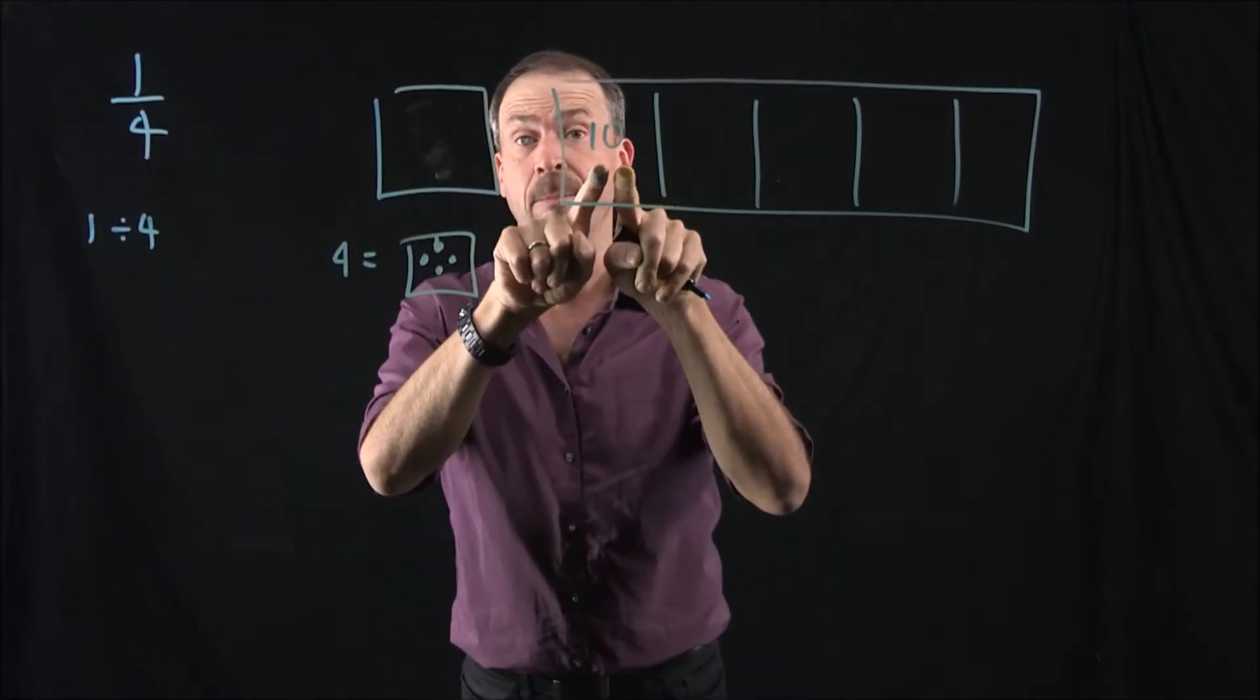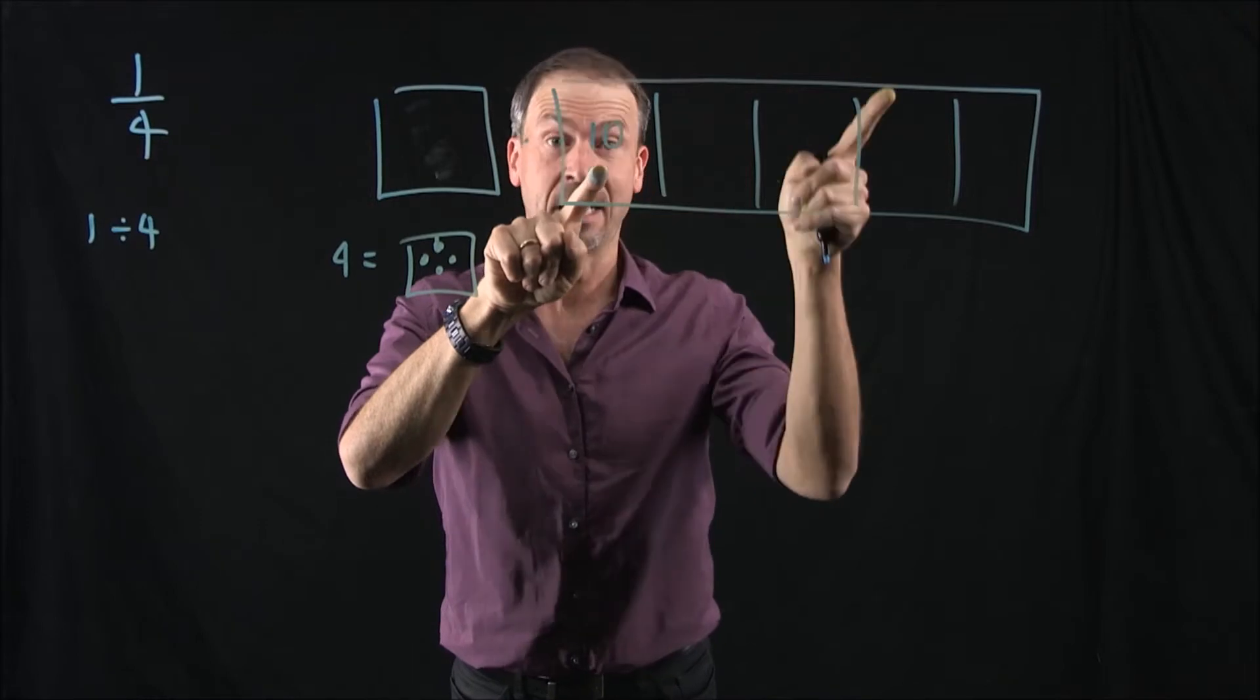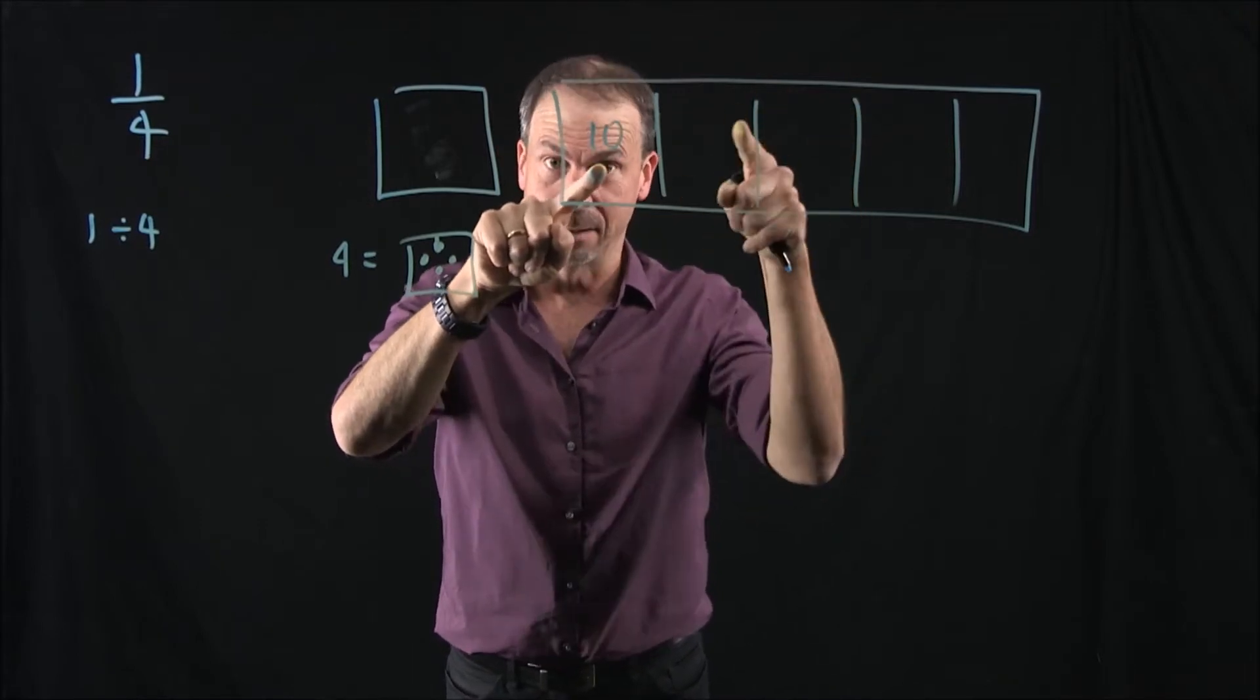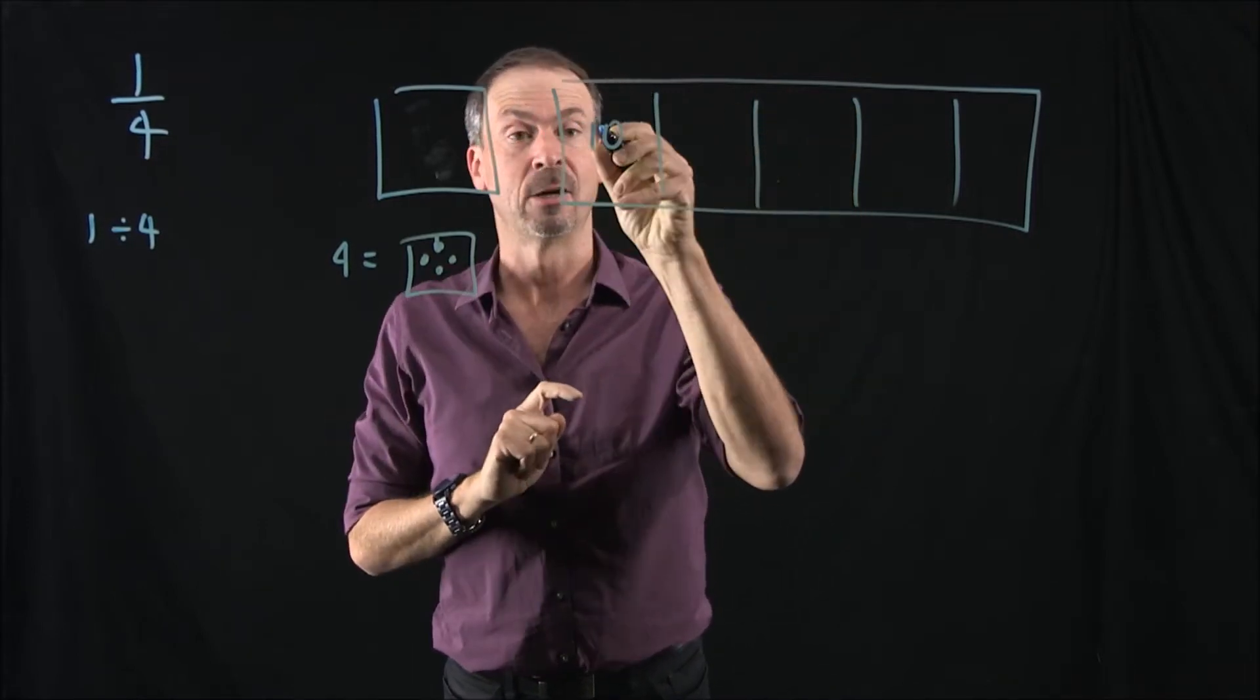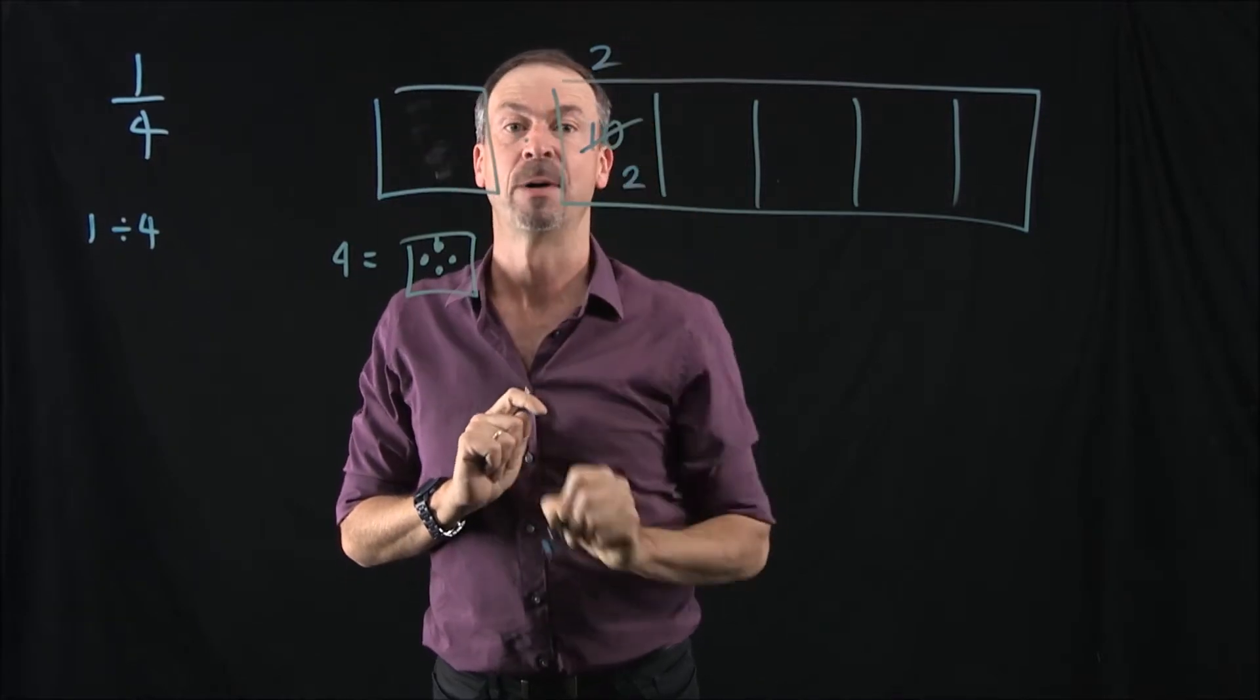So the question is, do I see any 4s in there? Well, I see one group of 4, a second group of 4. That's 2 groups of 4, that's 8 of them. And that'll leave 2 behind. So I'll see 2 at that level, and there'll be 2 dots left behind.